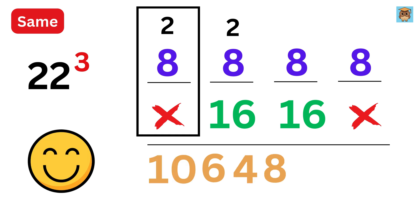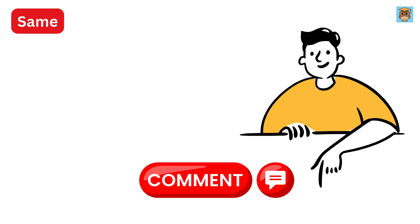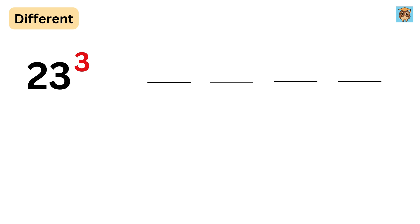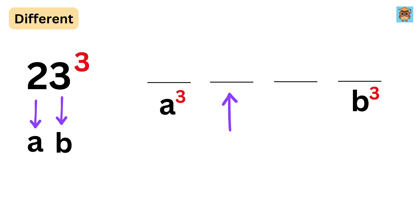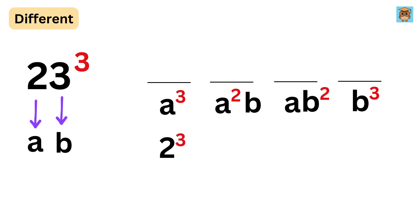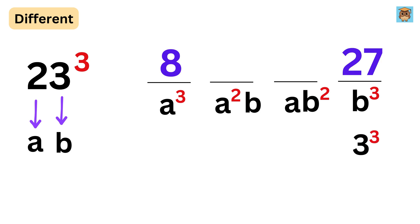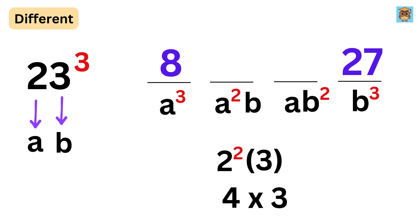22 cubed is 10648. Tell me in the comments what 33 cubed will be. Now for the last category — different numbers. Consider 23 cubed. If the first digit is a and the second is b, write a cubed in the first space, b cubed in the last space, then a² × b in the second space and a × b² in the third space. So: 2 cubed is 8, 3 cubed is 27, 2² × 3 = 4 × 3 = 12.